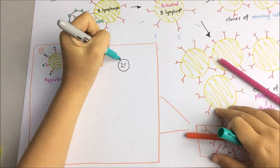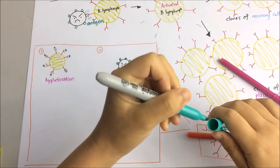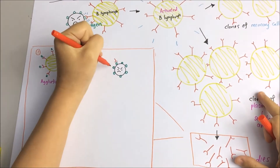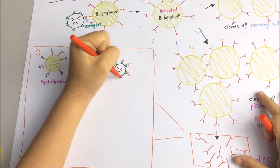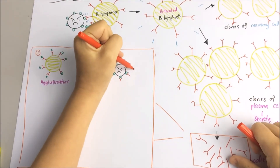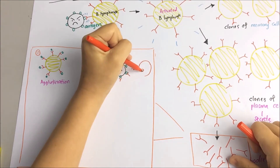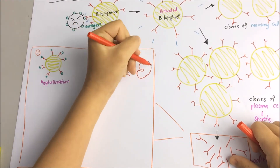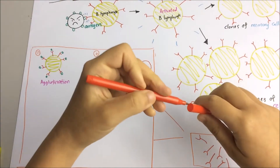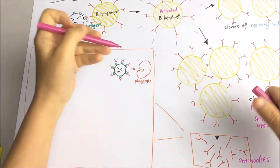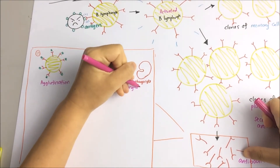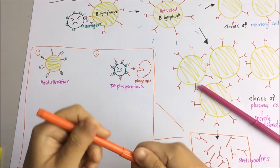Antibodies can also bind to the antigens on the outer surface of microorganisms. This acts as a marker, making the antigens easily detected and destroyed by phagocytes — a process known as phagocytosis.